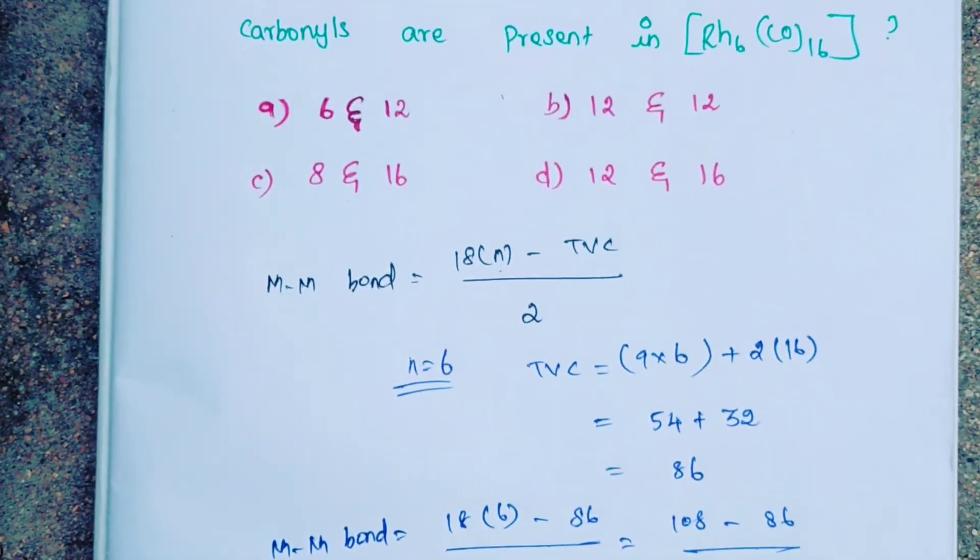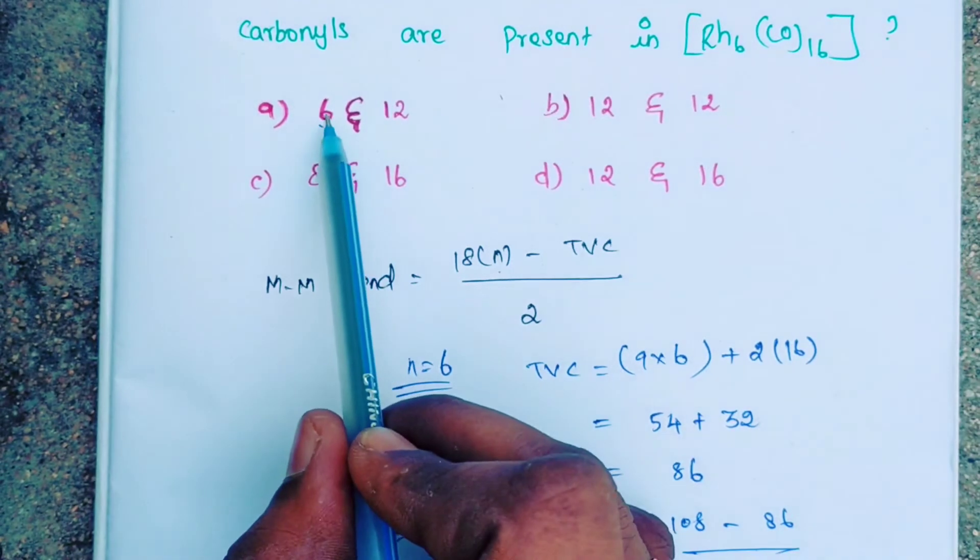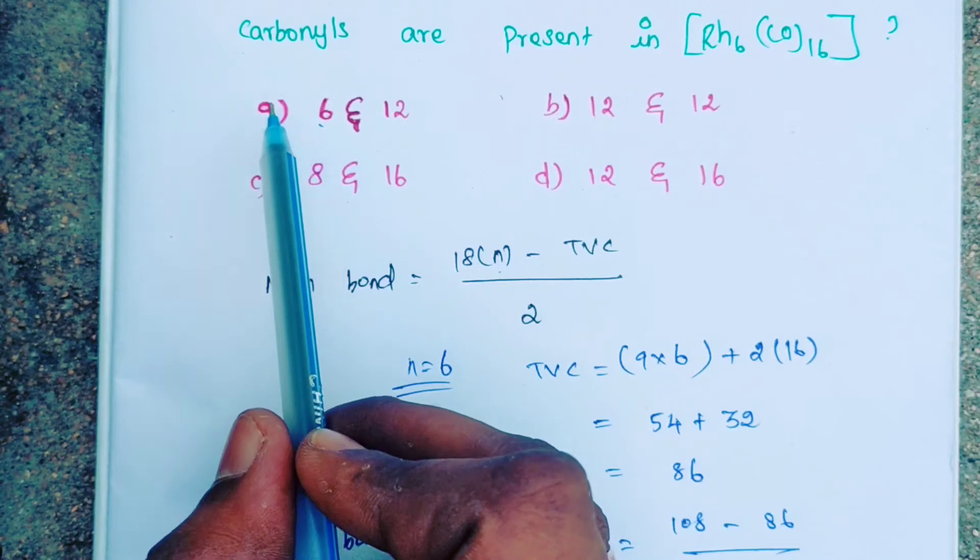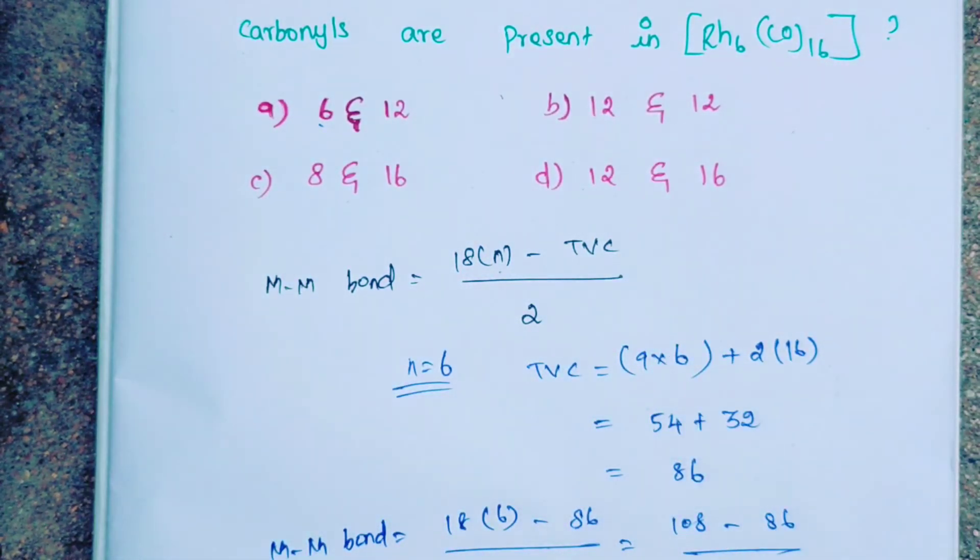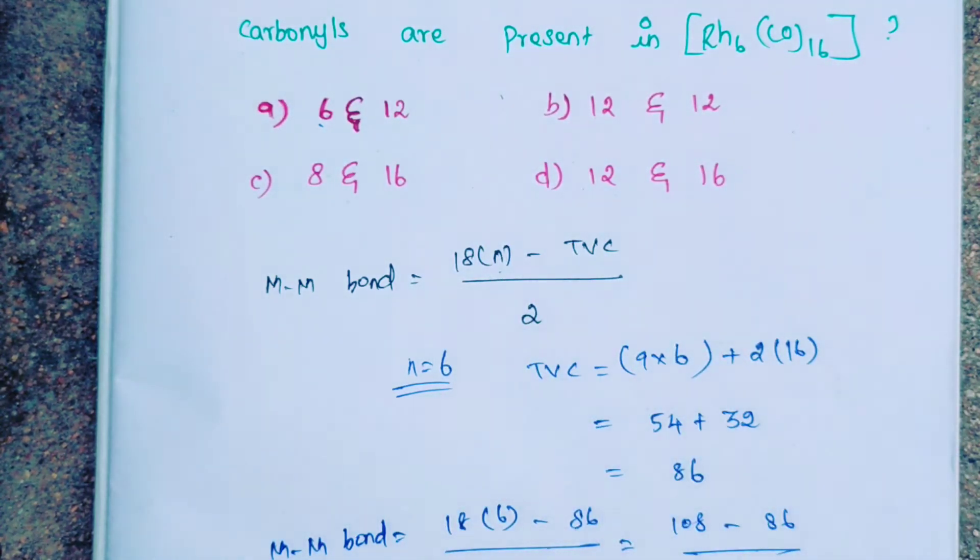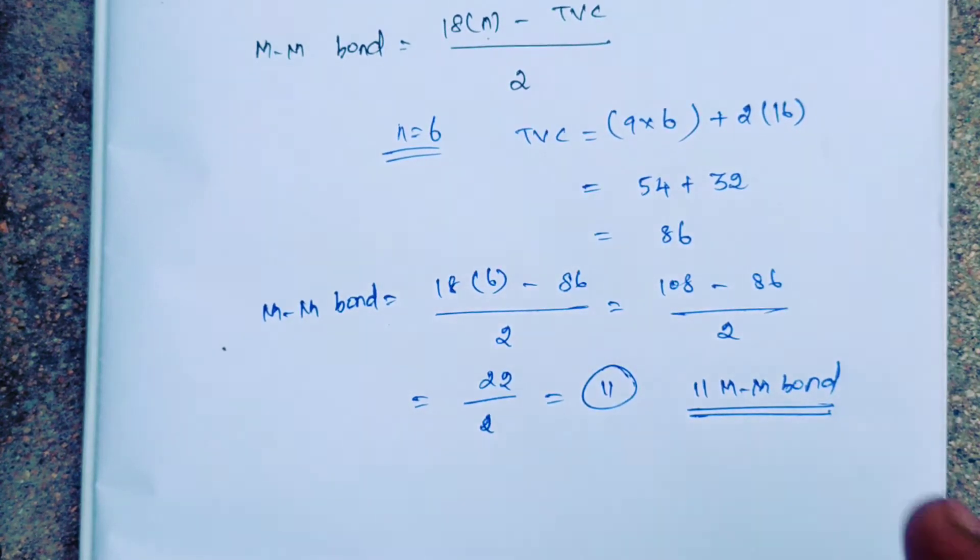Looking at the options with metal-metal bonds and terminal carbonyls, there is no option with 11 metal-metal bonds. In options A, B, C, D, none show 11. This is an exception case in this method.